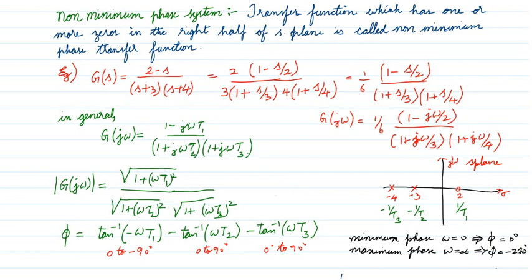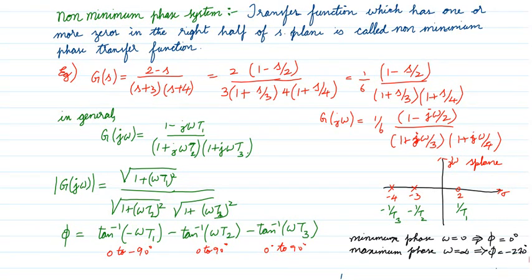The phase angle for the non-minimum phase system: tan⁻¹(−ωT1) ranges from 0 to −90°; the denominator terms each contribute −tan⁻¹ terms ranging from 0 to −90°. When ω = 0, the phase angle is 0°. When ω → ∞, the total phase angle is −90° − 90° − 90° = −270°, or −3π/2 in radians.